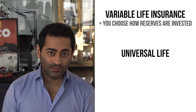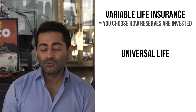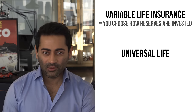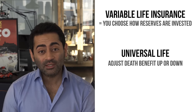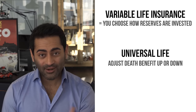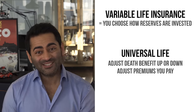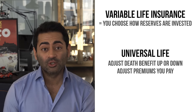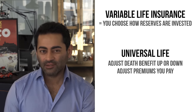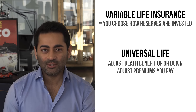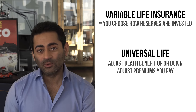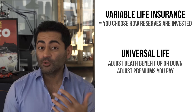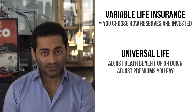A universal life insurance policy refers to a policy that has a number of parts that you can tinker with. You can adjust your death benefit up or down over time. You can also adjust your premiums up or down. And in theory, you can design it to look like any other type of life insurance policy. This ability to tinker with the different moving parts makes it universal in application.